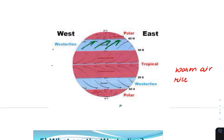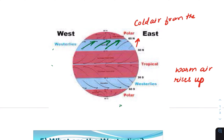Essentially, the air around the equator rises as it heats up. This upward motion causes the cooler air at higher altitudes to be moved to the previously mentioned latitudes.